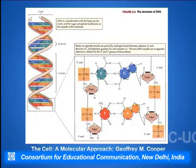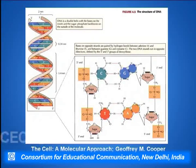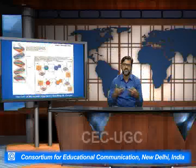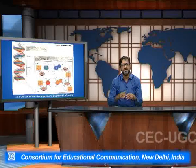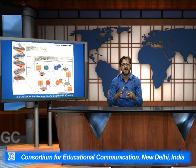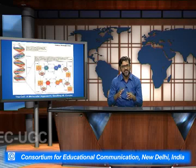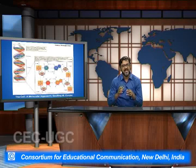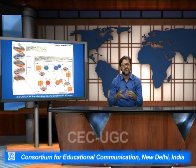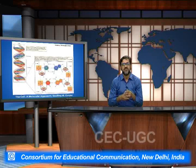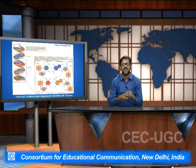Guanine base pairs with cytosine with the help of three hydrogen bonds, while adenine base pairs with thymine with the help of two hydrogen bonds. These form the fundamental structural details of the cell and they code for the subsequent level or functioning of the cells.